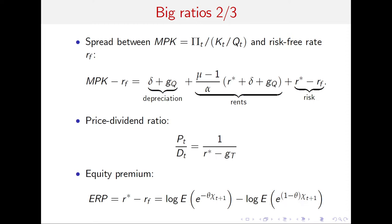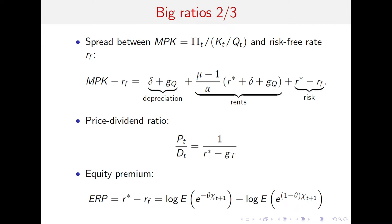The price-dividend ratio is given by the Gordon growth formula: 1/(R-star minus GT), where GT is TFP growth. Importantly, what we should plug in is the expected return on equity, not the risk-free rate. The risk-free rate has declined a lot, but the price-dividend ratio has only increased slightly. If you plug in the observed decline in the risk-free rate, the price-dividend ratio should be much higher. The fact that it's increased only moderately indicates that R-star has not declined as much as the risk-free rate — the risk premium has increased.